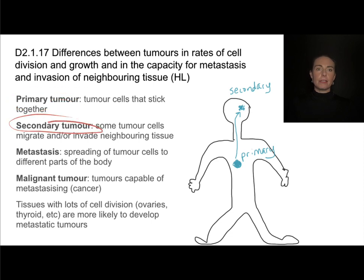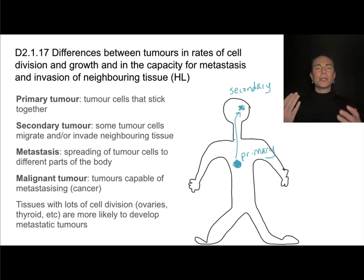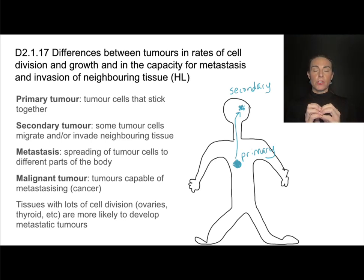Tumors are things — metastasis is a process. Malignant tumors are special types of tumors that are capable of metastasizing. Not all primary tumors become secondary tumors; only the malignant tumors are capable of metastasizing. Malignant tumors are more likely to occur in areas with high rates of cell division, such as the ovaries or the thyroid — places where we are replacing cells a lot. The more cell division that has to occur, the more likely it is that a mutation will take place in either the proto-oncogenes or the tumor suppressor genes.